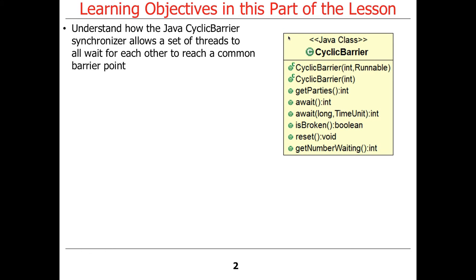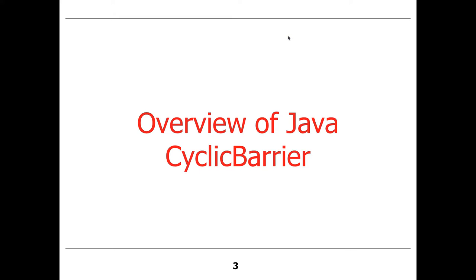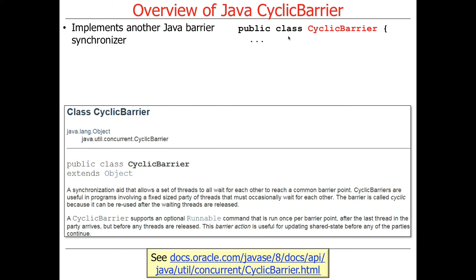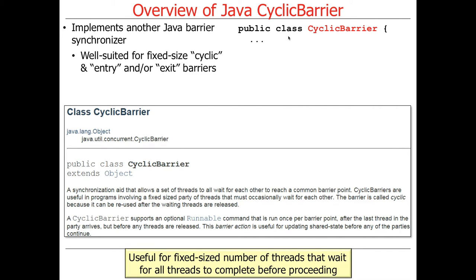A cyclic barrier allows a set of threads to all wait for each other to reach a common barrier point. If you go back and read the definition of a countdown latch, you'll see it has an ever so slightly different definition. It's a fairly simple interface but has a few extra things — in particular the reset method is something that's different. A cyclic barrier is yet another barrier synchronizer in Java, well suited for fixed size, cyclic entry or exit barriers. You can use it for one-shot barriers, but it might be overkill.